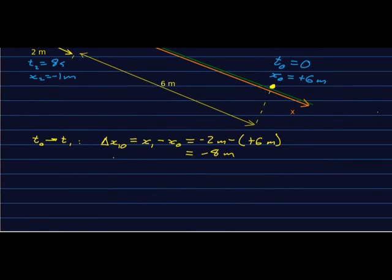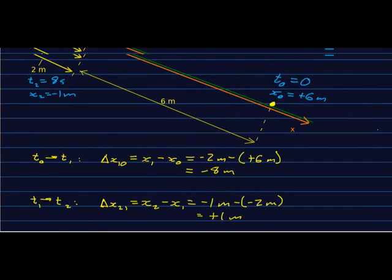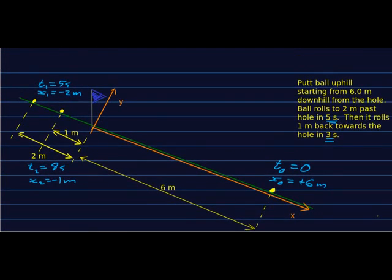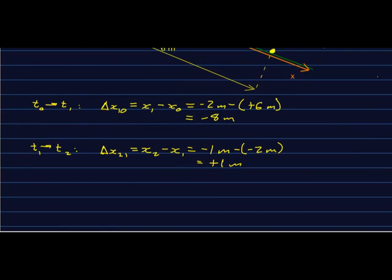So now I'll do the same thing for the time period from t1 to t2. So I'll say delta x sub 2,1 is x2 minus x1, which is negative 1 meter minus negative 2 meters, or plus 1 meter. And that, again, makes sense because the ball rolled downhill during that time period, and that's our positive direction.